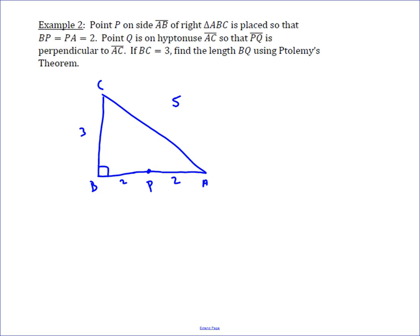You're asked to draw a perpendicular to AC through point P at Q, and the goal is to find the length BQ. The problem tells you to use Ptolemy's theorem, as this is a great example of where it can be very valuable.